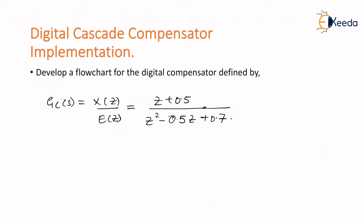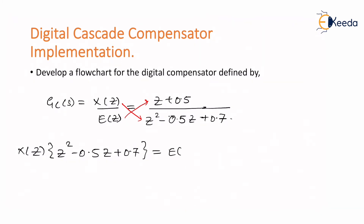What we are going to do is cross-multiply the given expression. X(z) will go with the denominator and E(z) will go with the numerator. Hence the equation becomes X(z) multiplied by z squared minus 0.5z plus 0.7, which is equal to E(z) multiplied by z plus 0.5.